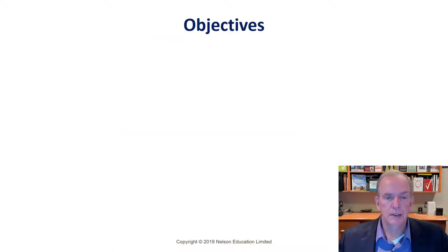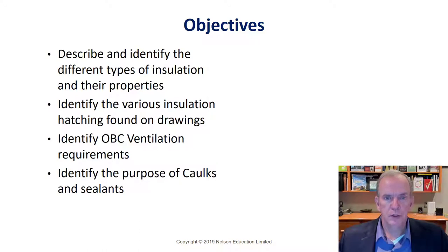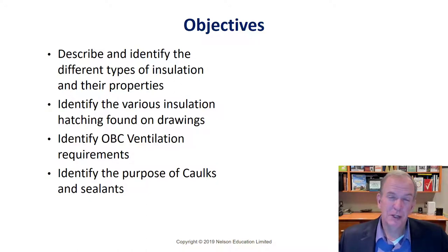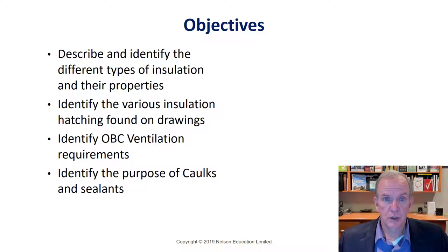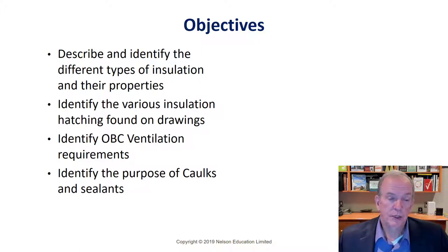And of course, it's going to tie into insulation types as we describe them. I don't like to make any one video too long, so they really are integrated together. We'll look at the different types of insulation and their properties. We kind of talked about R-values in the last session — there's that table — and this is all based on Chapter 12 in your textbook, Understanding Construction Drawings. So make sure you can refer to that. We'll identify the various hatchings we see on drawings, how to interpret them, and ventilation requirements.